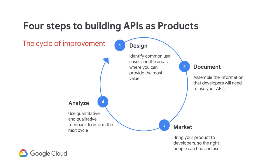Next, take a look at the needs of your application developers who will create the experience for your customers. They need a way to get started quickly with your API product. That's why documentation is so important. But documentation alone is not enough. Make it easy for your developers to discover your APIs, say through an Apigee developer portal. The documentation makes the APIs accessible. And finally, review the analytics to determine what works well and what needs improvement, then continue to iterate to improve your API products.